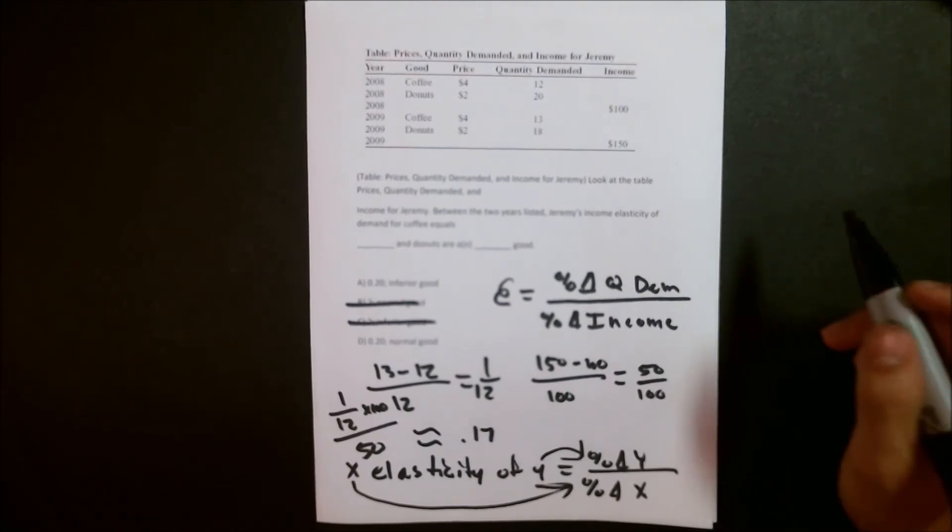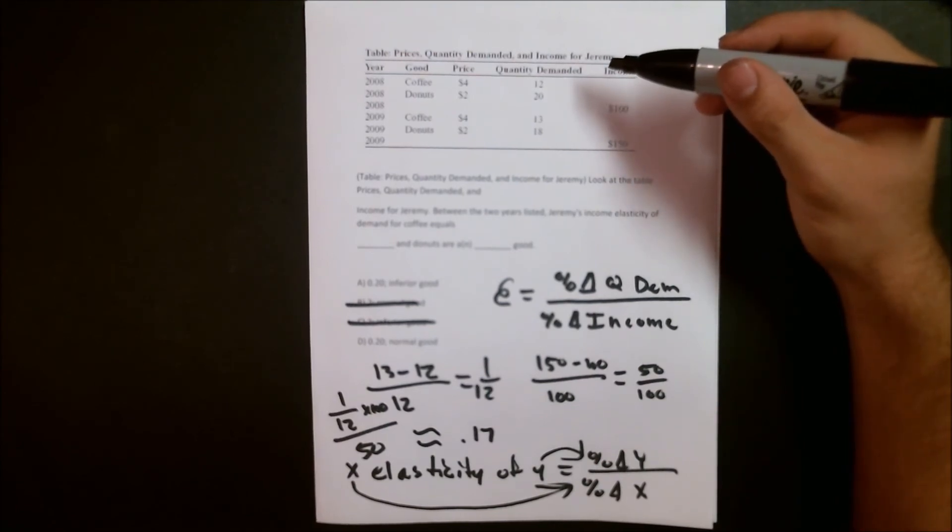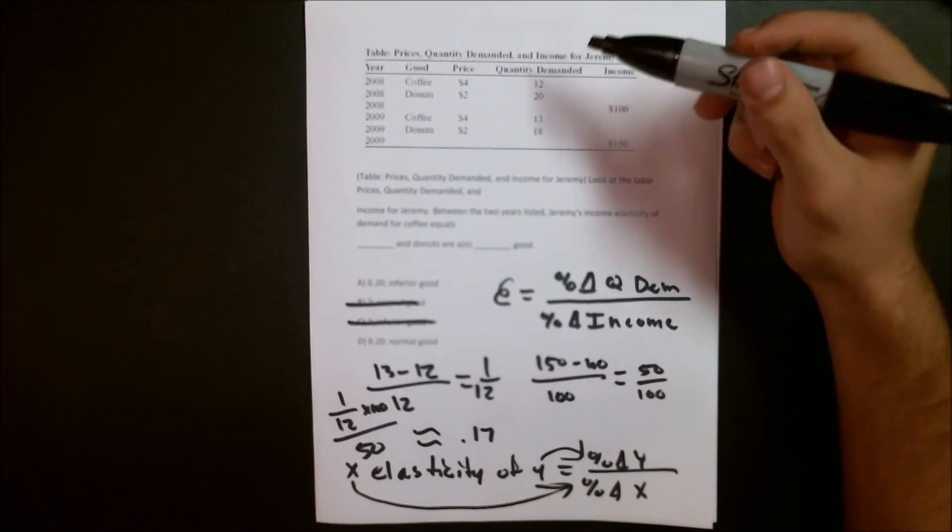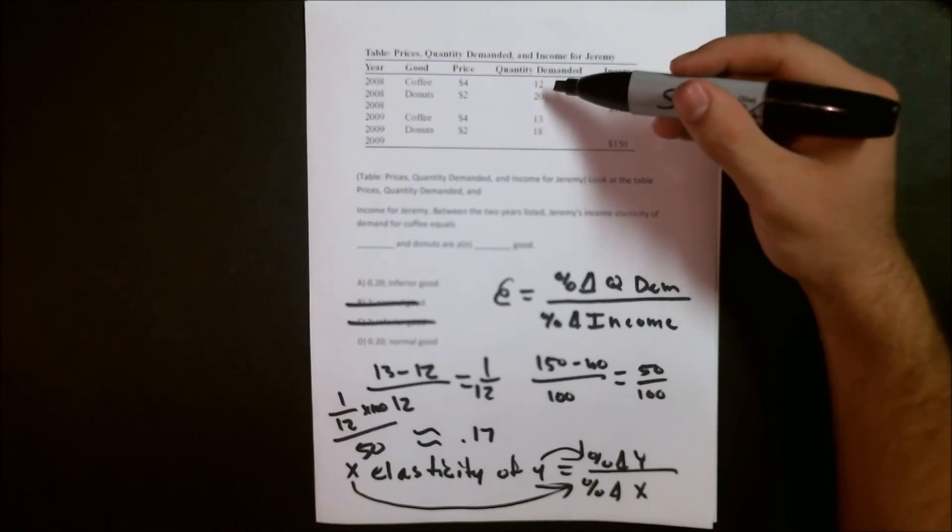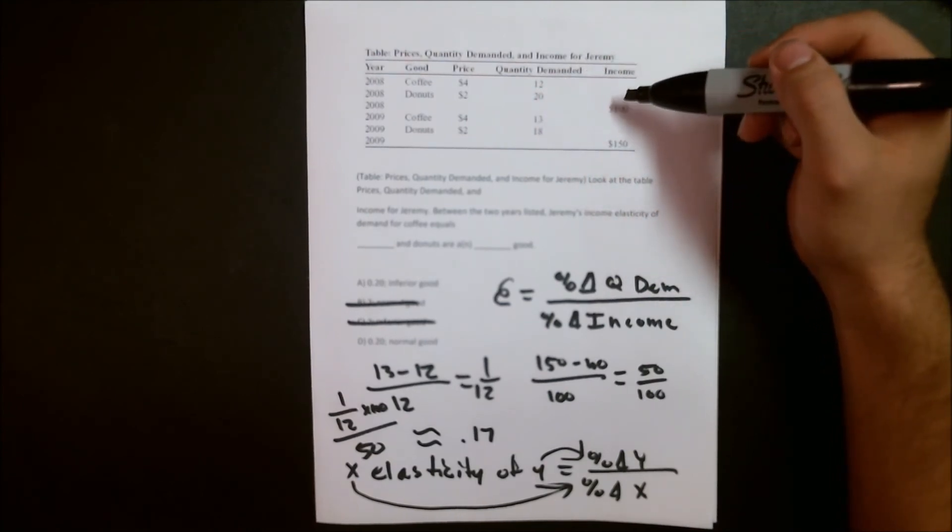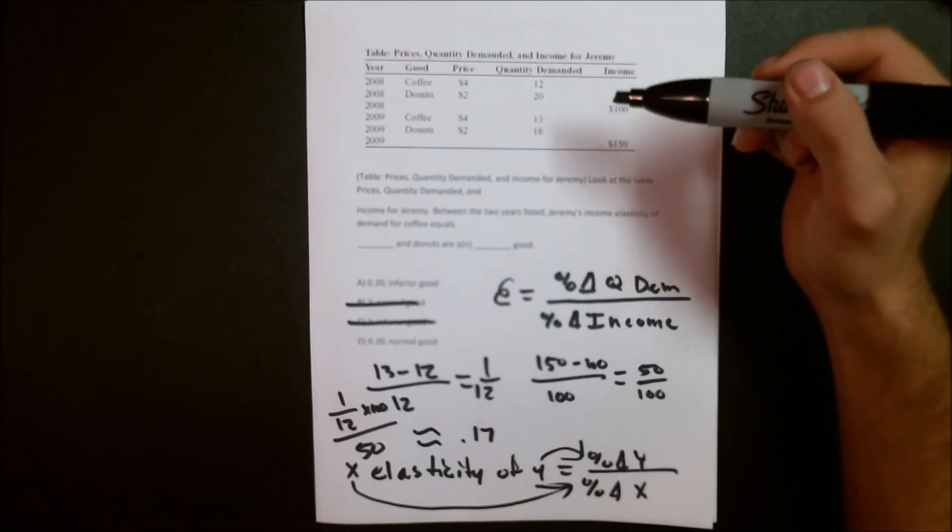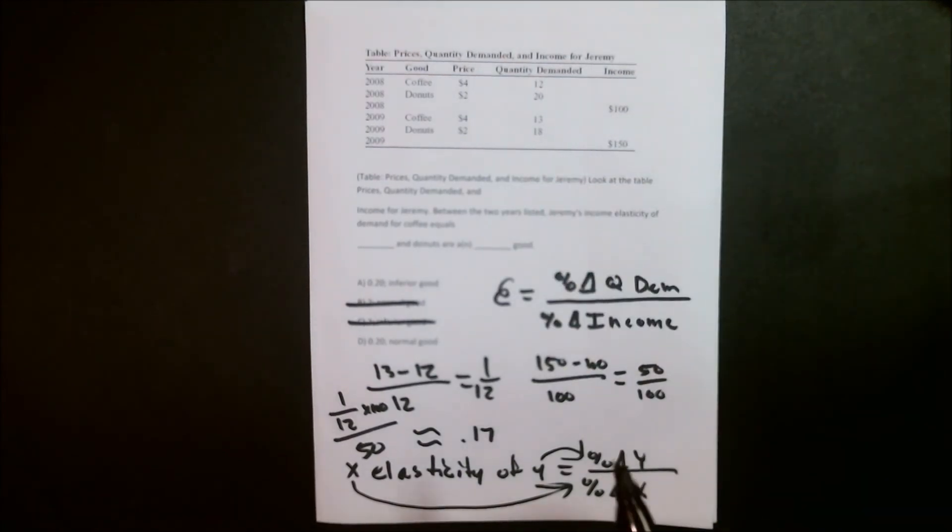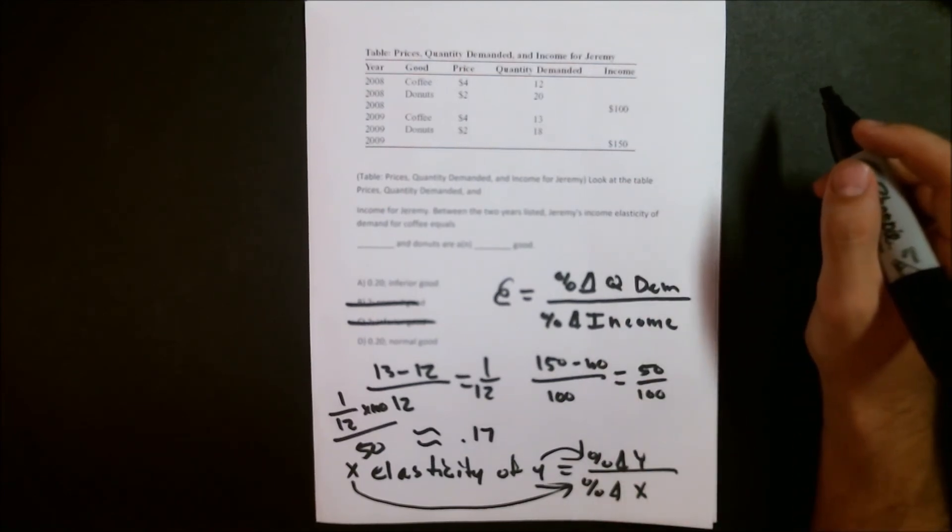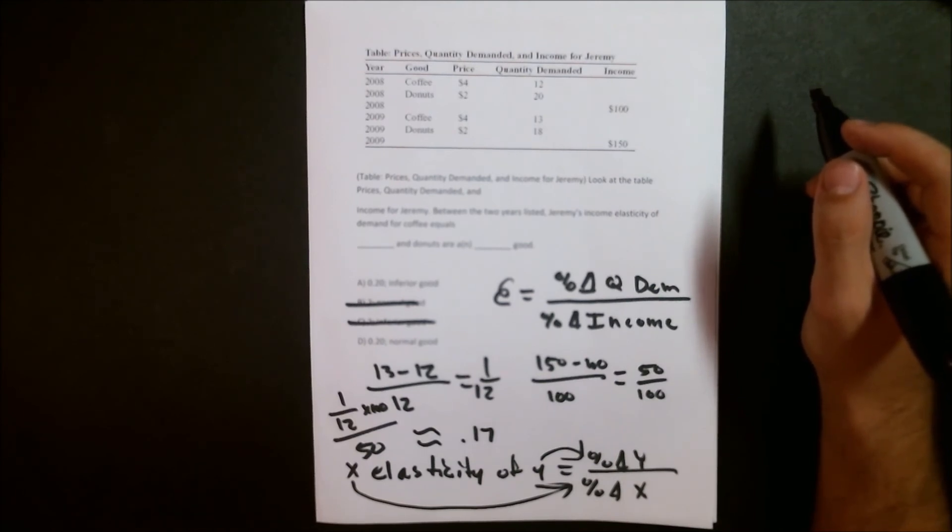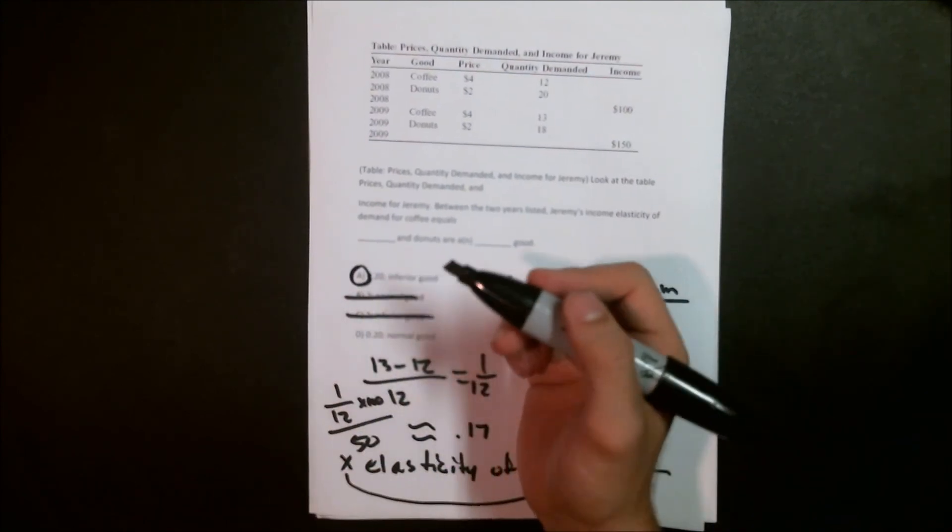In this case, we can look at how many donuts Jeremy consumed in each year and his incomes. In 2008, Jeremy consumed 20 donuts with an income of 100. In 2009, Jeremy consumed 18 donuts with an income of 150. What that means is that as his income increased, he actually consumed less donuts, which would mean it would happen to be an inferior good. That means that the answer is A, which is that the income elasticity of coffee is 0.2, and donuts are an inferior good. So we're going to circle A.